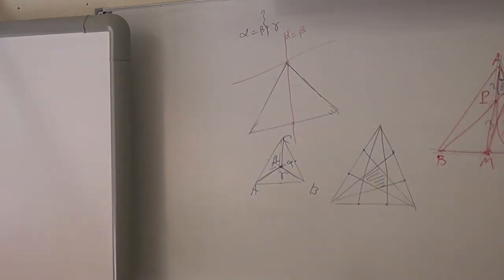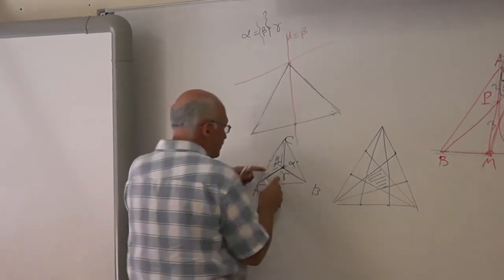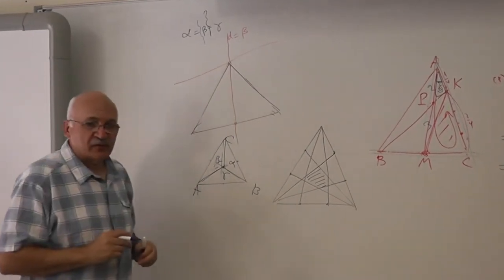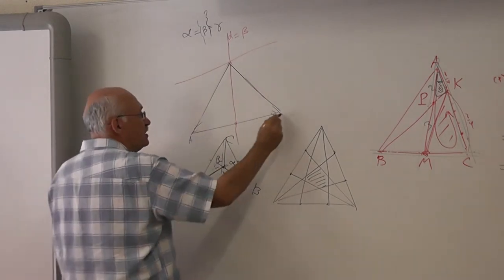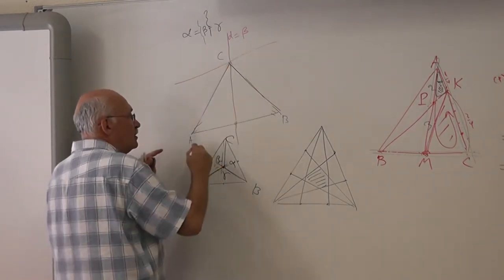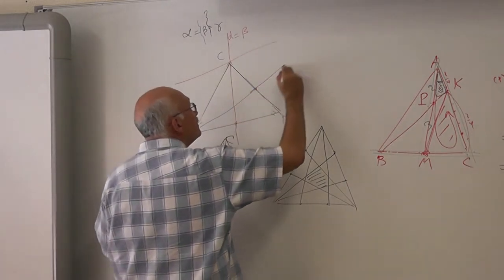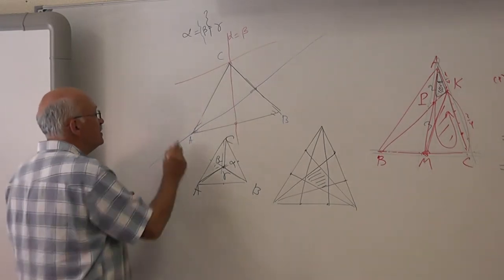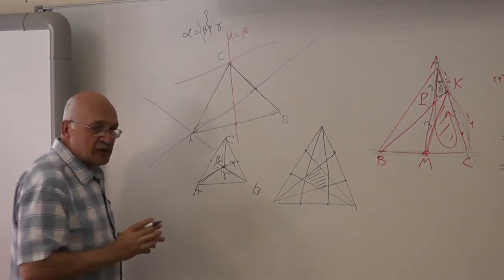Now let's find the set of points for which beta is equal to gamma. What would this set be? The median to BC, and its extension, and the line parallel to BC — two other lines.